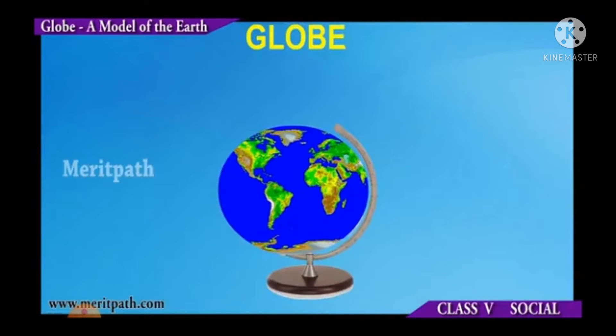Have you ever seen the globe? I think you have not seen a globe. Let's see the globe. Before watching the video of globe, I will tell you some important points related to globe. A globe is a spherical model of the earth. We can also say a globe is a picture of a planet drawn on a sphere. It is like a scale model of the planet. The word globe comes from the Latin word 'globus', meaning round mass or sphere.